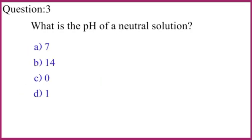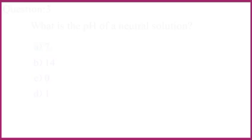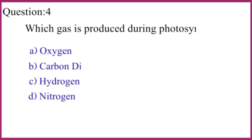What is the pH of a neutral solution, like water? The pH of a neutral solution is 7. Below 7 it is acidic, and above 7 it is basic.